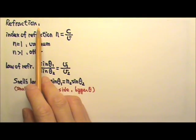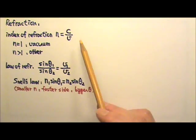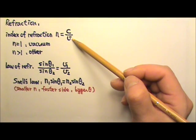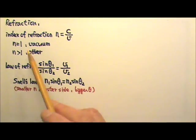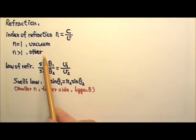For refraction, we talked about this thing called index of refraction, n, that is defined as the speed of light in vacuum divided by the speed of light in that particular medium. So n equals 1 for vacuum, and n is bigger than 1 for all other media.